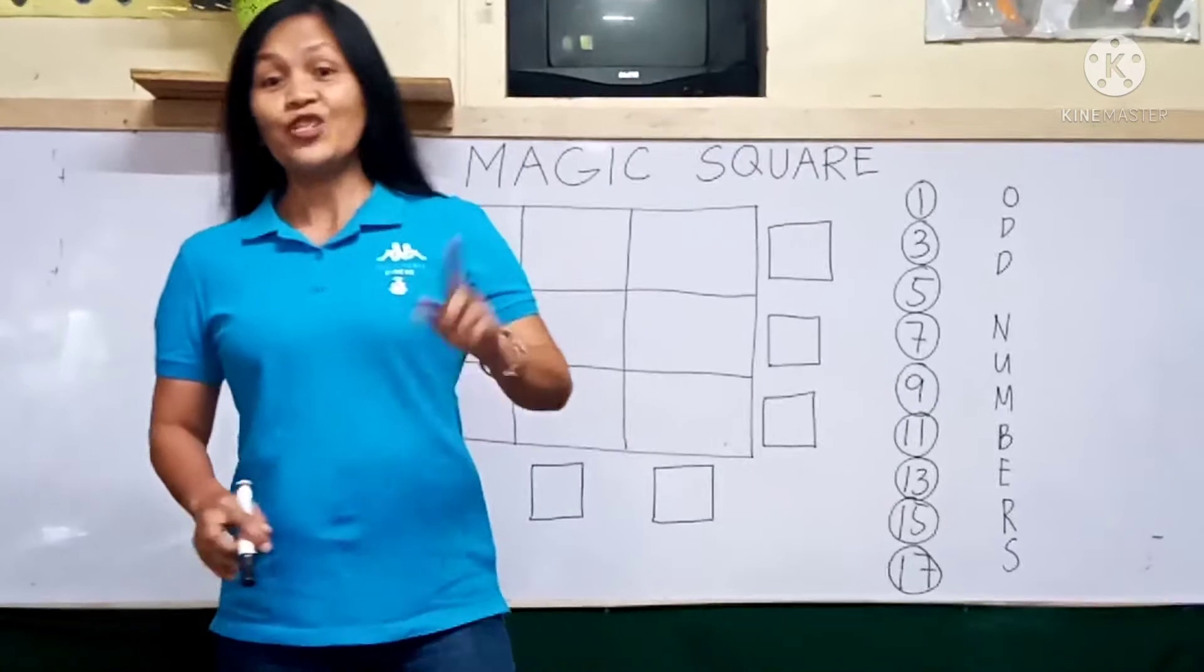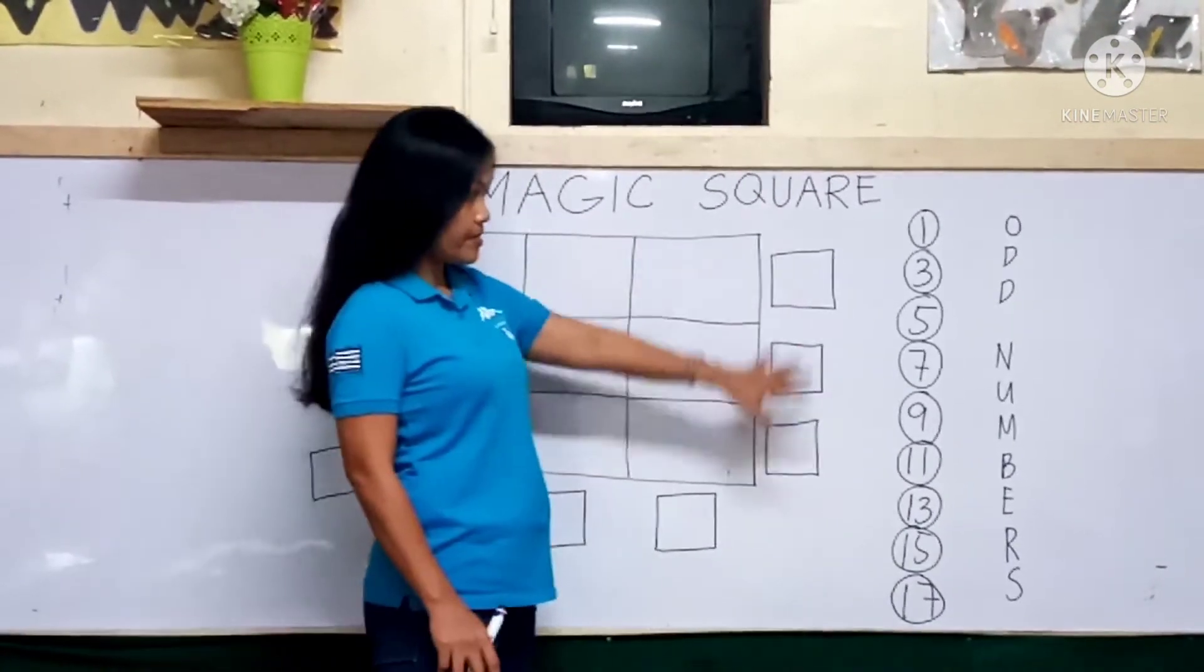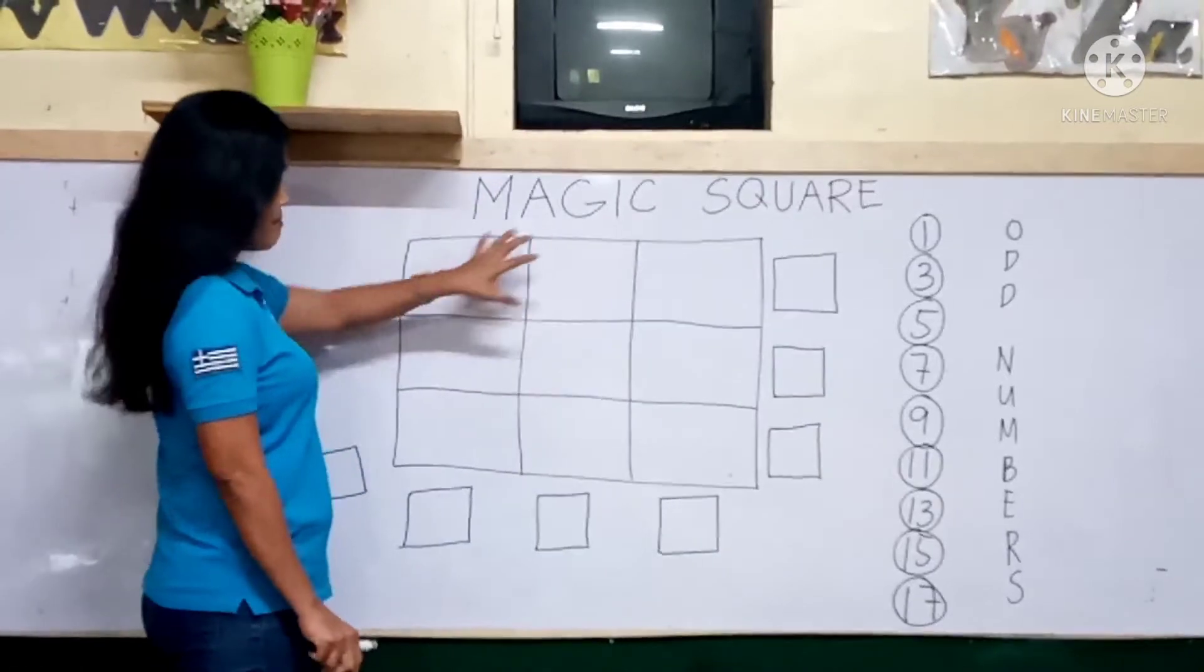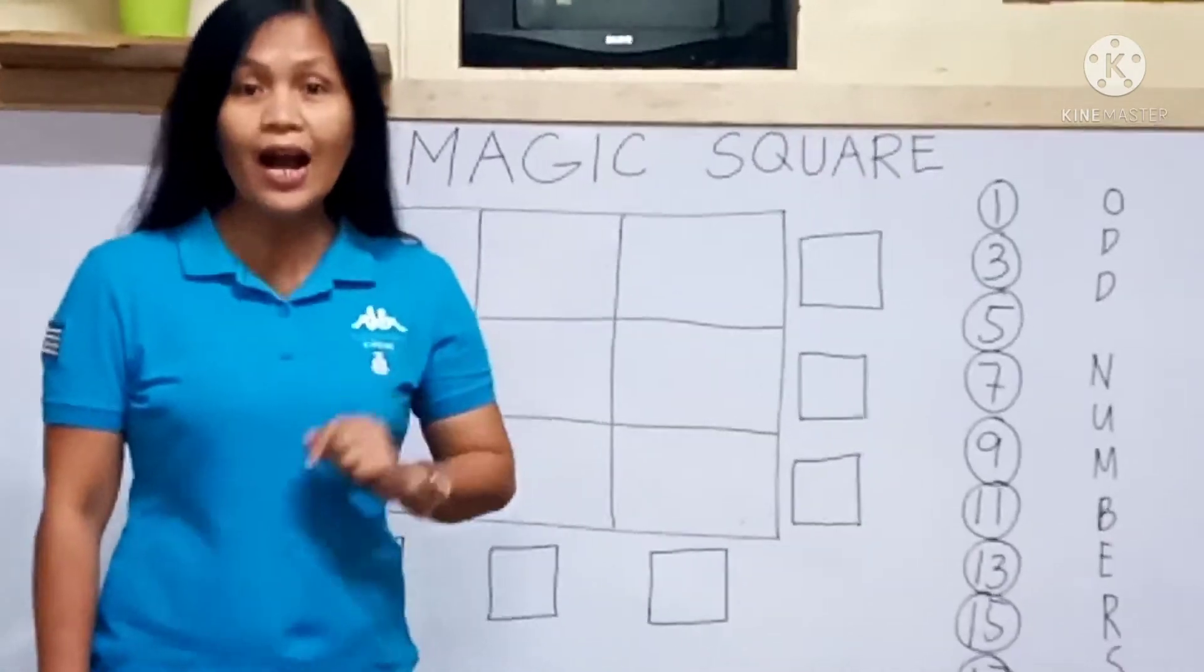Hello everyone, do you know where to put these nine odd numbers inside the magic square? Well, if not, I'll teach you how.